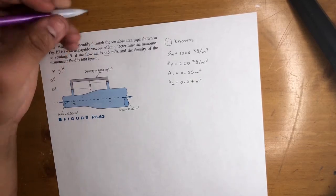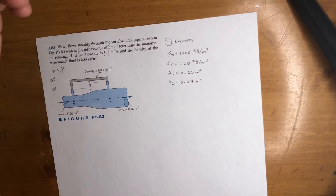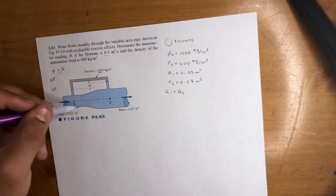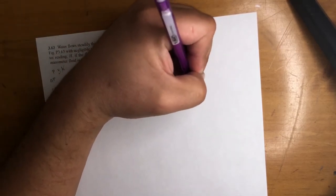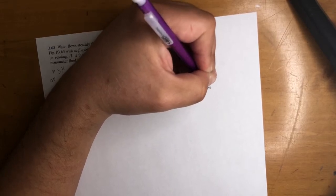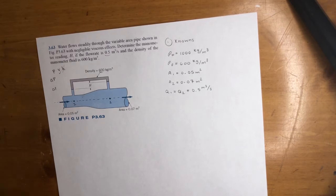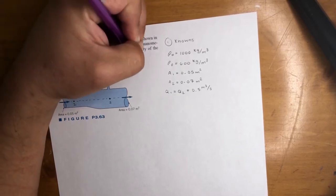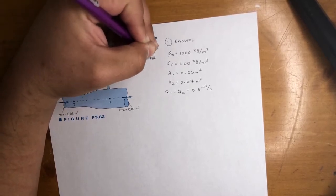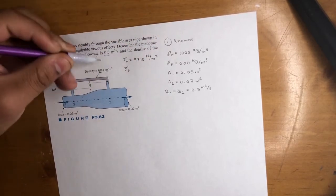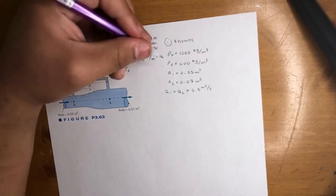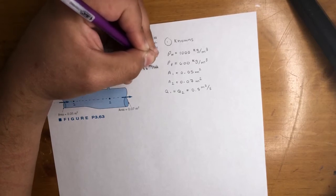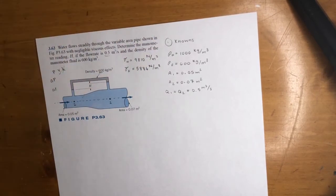What else? Oh, the flow rate, obviously right here. So let's go ahead and put that here. Q1 is equal to Q2, flow rate's the same everywhere. That is equal to 0.5 meters cubed per second. And we're also dealing with manometers, so let's go ahead and get the gammas for those. Gamma of water: that's 9,810 newtons per meter cubed. Gamma of the fluid: multiply this number times 9.81, gravity. That will give you 5,886 newtons per meter cubed. Okay, cool.